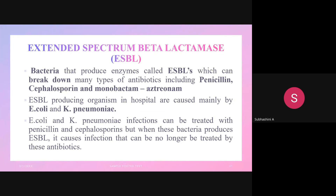Extended-spectrum beta-lactamase (ESBL): some bacteria produce an enzyme called ESBL that can break down antibiotics — mainly penicillins, cephalosporins, and monobactams (aztreonam). ESBL is mainly caused by E. coli and Klebsiella pneumoniae. Since E. coli and Klebsiella pneumoniae infections are mainly treated by penicillins and cephalosporins, when these bacteria produce ESBL, the infections can no longer be treated by these antibiotics.